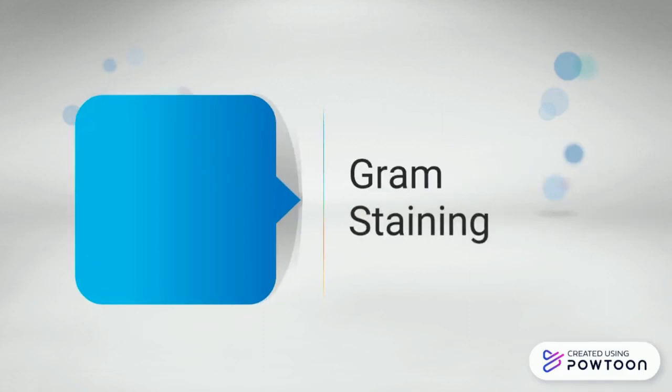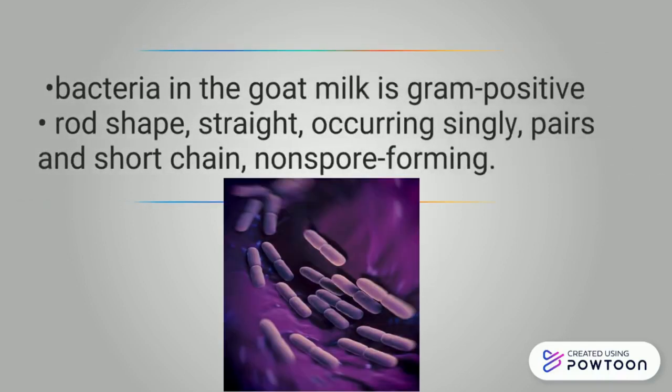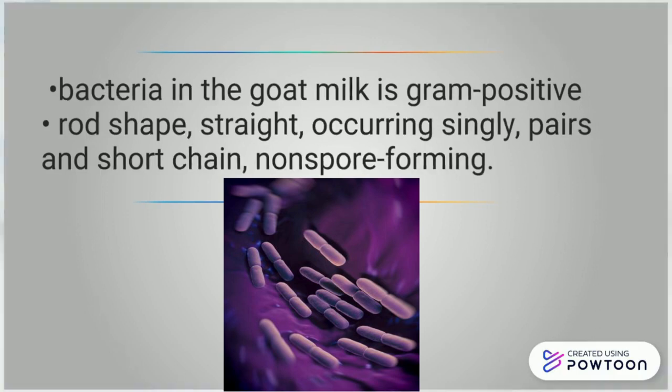The first is gram staining. Based on observation, bacteria in the goat milk give purple color under the light microscope with thousand magnification when undergoing gram staining. Thus, we determine that bacteria in the goat milk is gram positive. The shape of the cell is rod-shaped, straight, occurring as singly, pairs, and short chains, and there are non-spore forming bacteria.